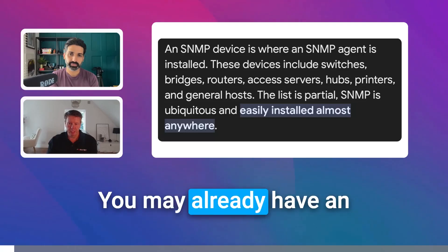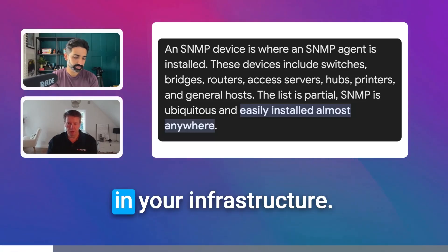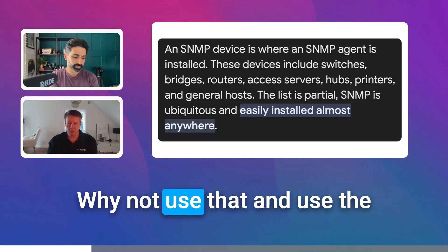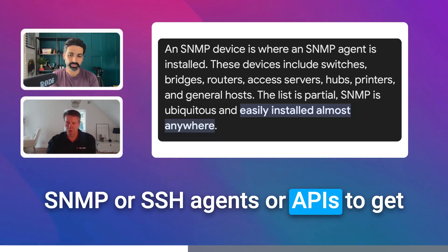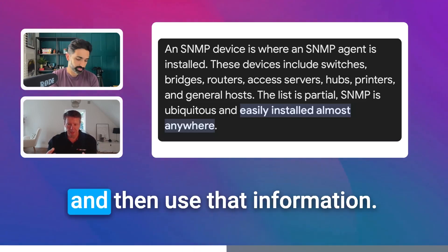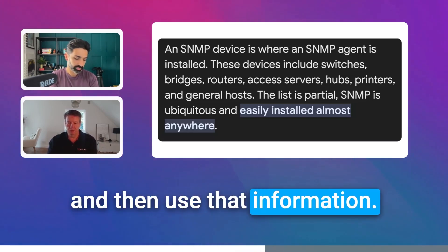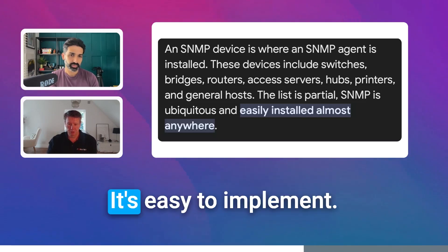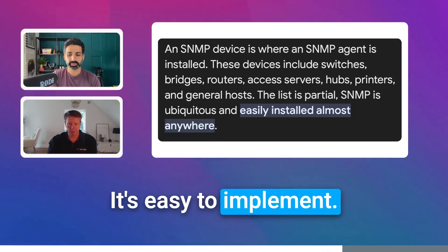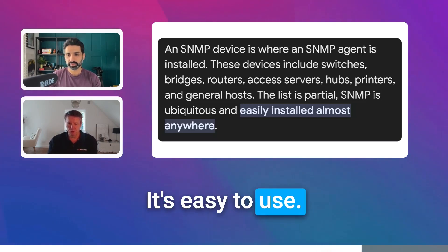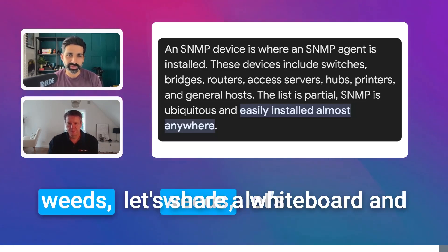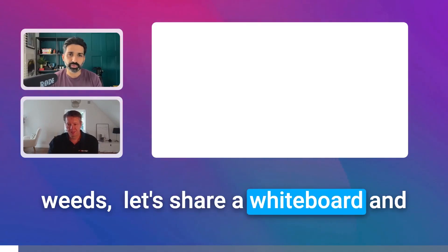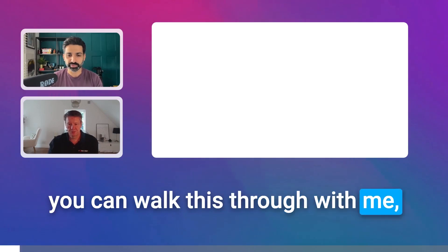You may already have an SNMP community string in your infrastructure. Why not use that — use SNMP, SSH agents, or APIs to get information from the infrastructure and then use that information? It's already there. It's easy to implement. It's easy to use. Before we get carried away in the weeds, let's share a whiteboard and you can walk this through with me.